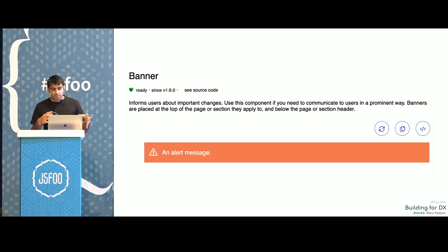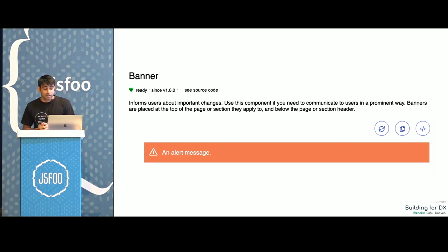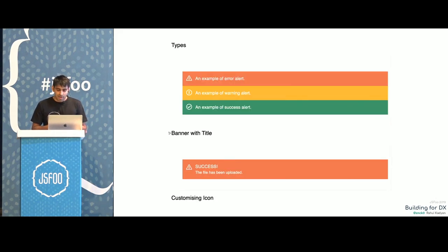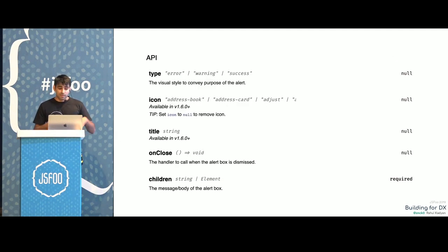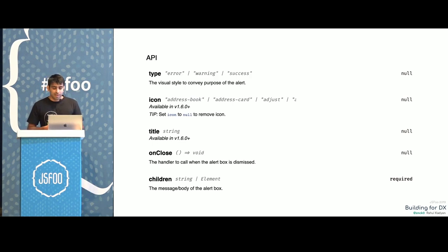Toward visibility, we created a documentation page for each component. The purpose was to highlight all the relevant information required for the component: quality status and where the source code is. We included examples you can look at, and we provided the API. Our system was React-based and we were using TypeScript, so we extracted API documentation out of the components and presented it in the component documentation itself.